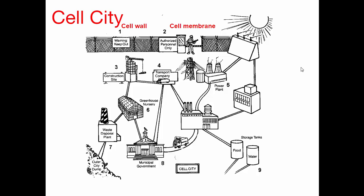Number three — a construction site where you're building the actual buildings of the city. What's that going to be like? Ribosomes. A cell itself is made of lots of things, but much of it is protein — and that's what ribosomes make. Ribosomes are actually making the parts of the cell itself.